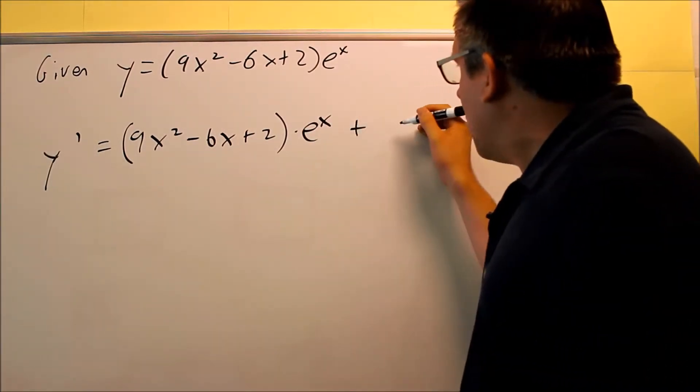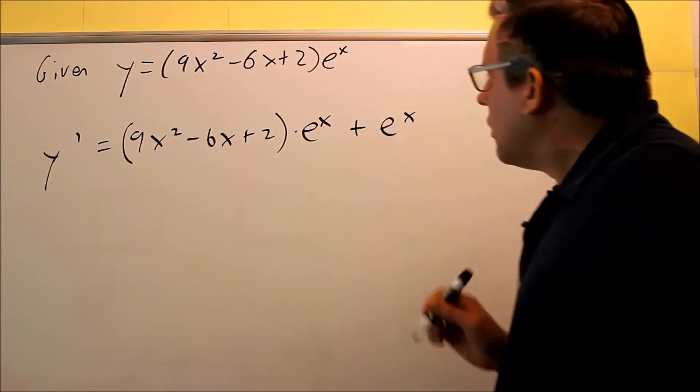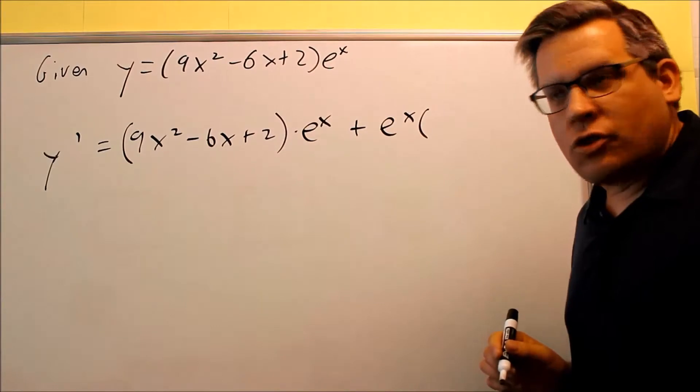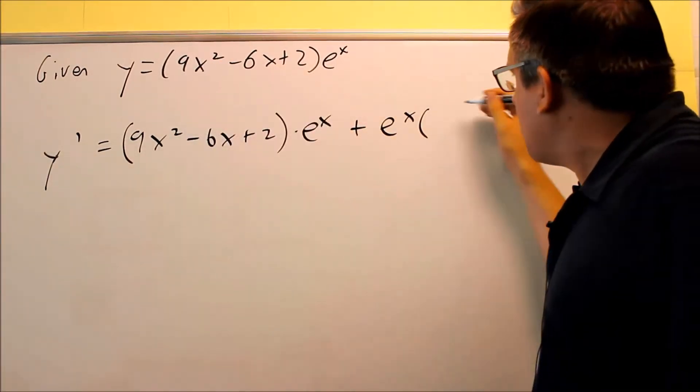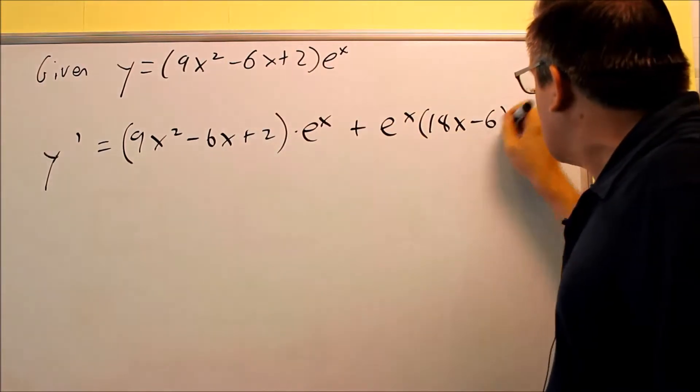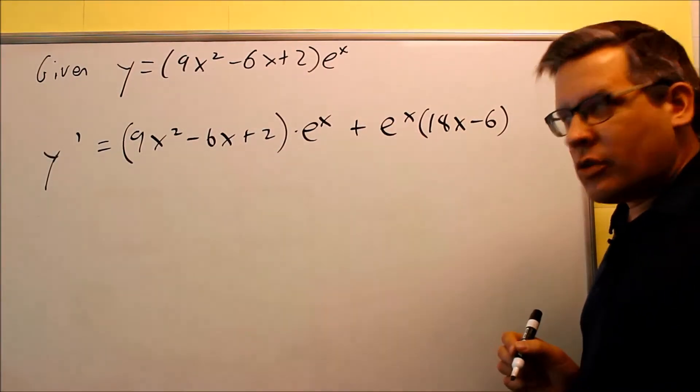plus the second thing, which is e to the x, times derivative of the first term. Power rule, 2 comes down, multiplied by 9, 18x. This, you're just going to get minus 6, and that's as far as you can go with that.